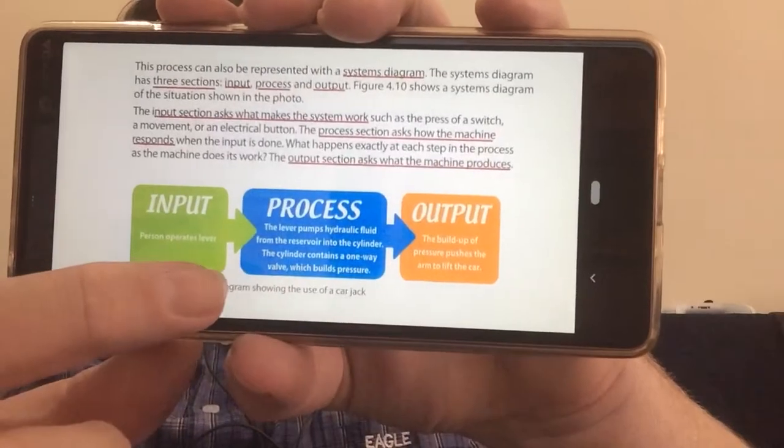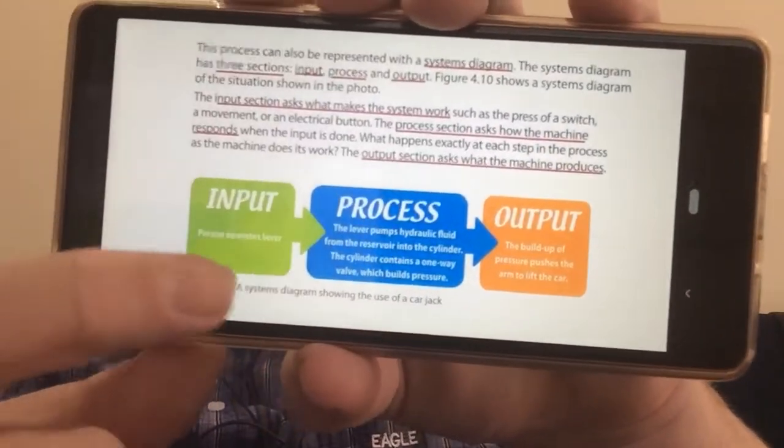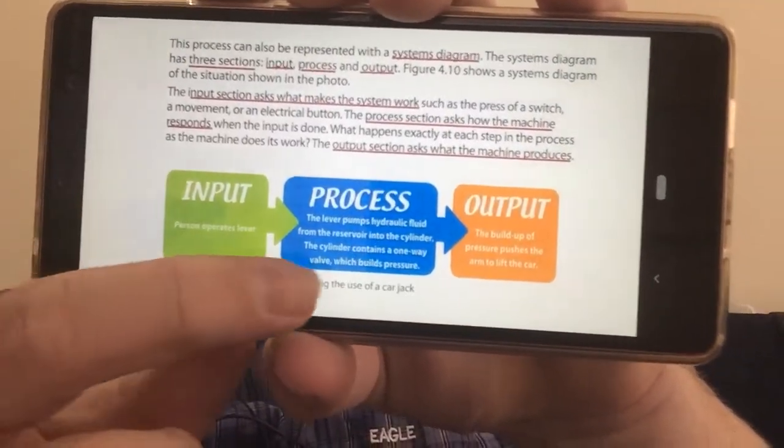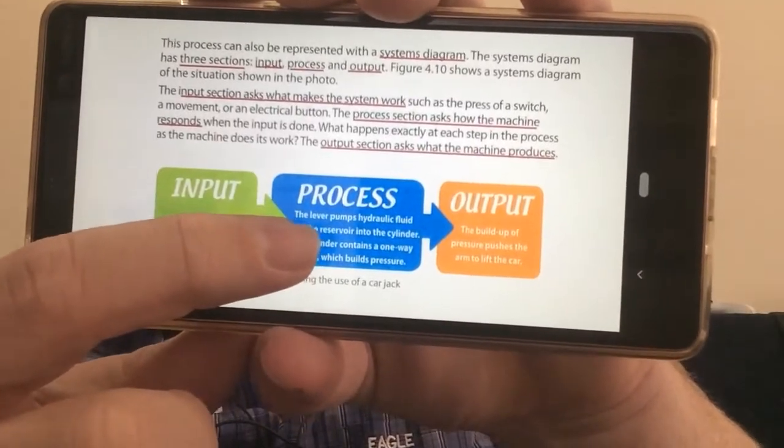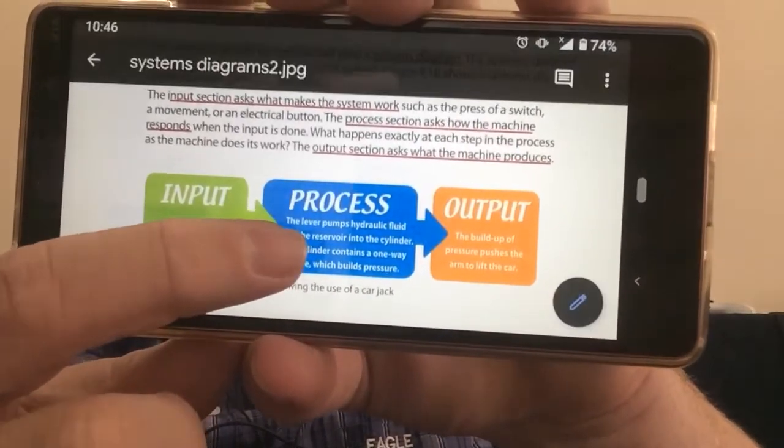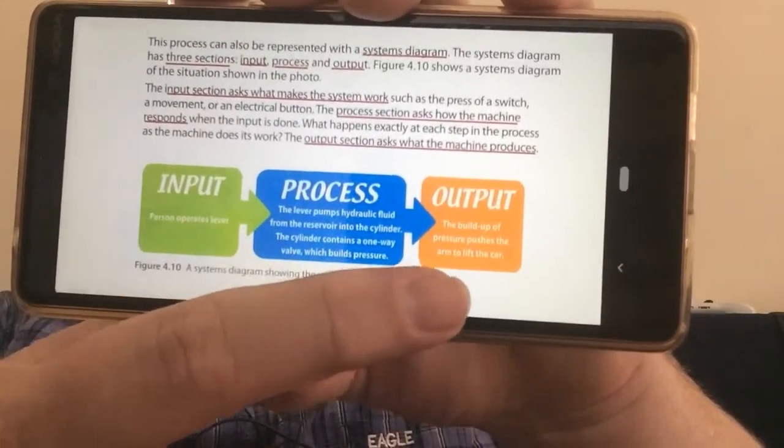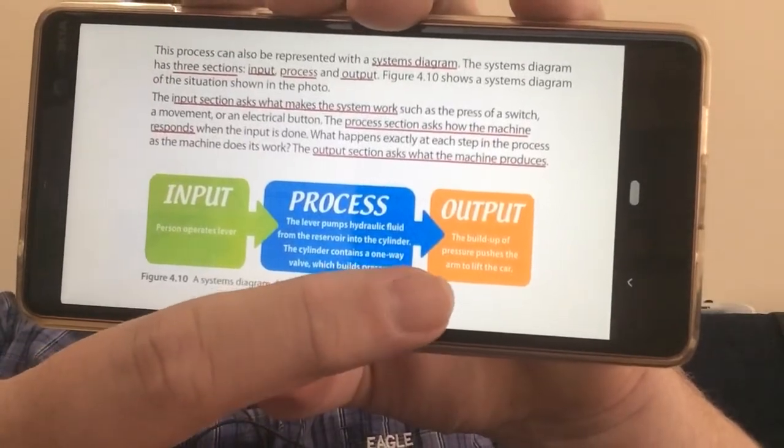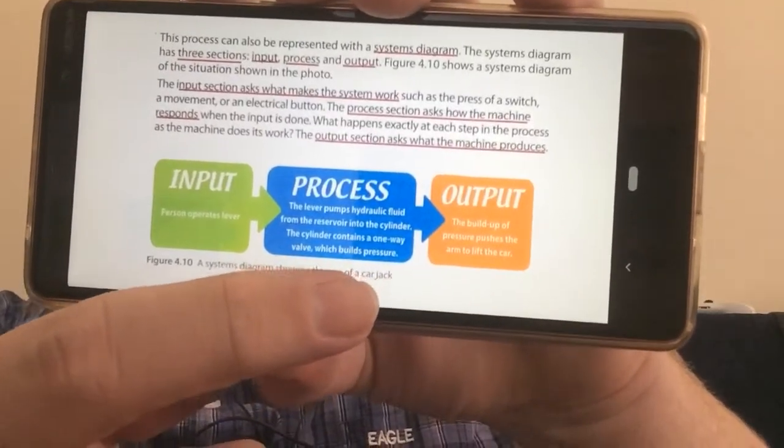The input section asks what makes the system work. The process section asks how the machine will respond. And the output section asks what the machine produces.